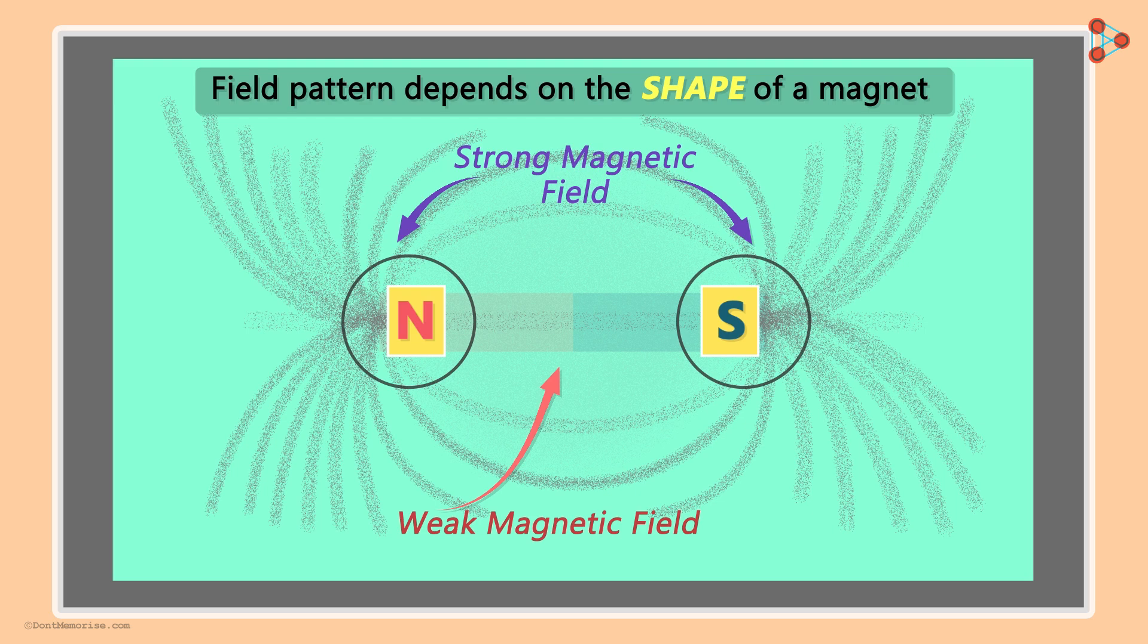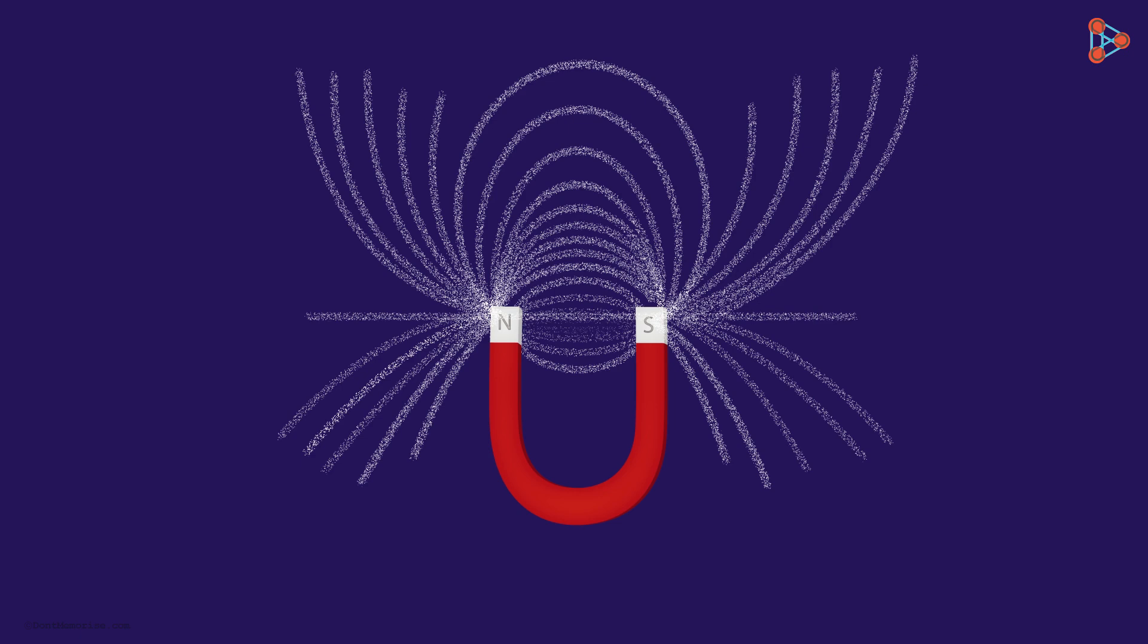Yes, different shaped magnets have different field patterns. For instance, here is the field pattern of a horseshoe magnet. You can see that more iron filings are gathered around the two poles while less so elsewhere.